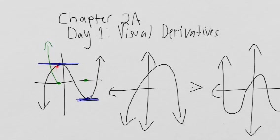Still increasing, but increasing at a less steep rate. So it's increasing, slowing down, totally flat. At this point, the function is now decreasing, so the derivative must be negative. And it's decreasing kind of steadily at first, but then it starts decreasing at a steeper and steeper rate. And then eventually it's still decreasing, but it's flattening out, and then it's 0 again.